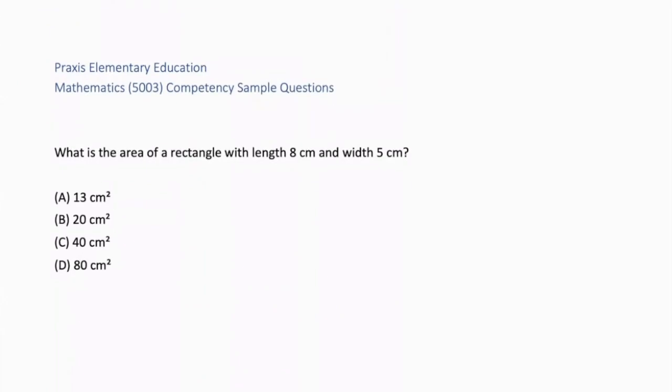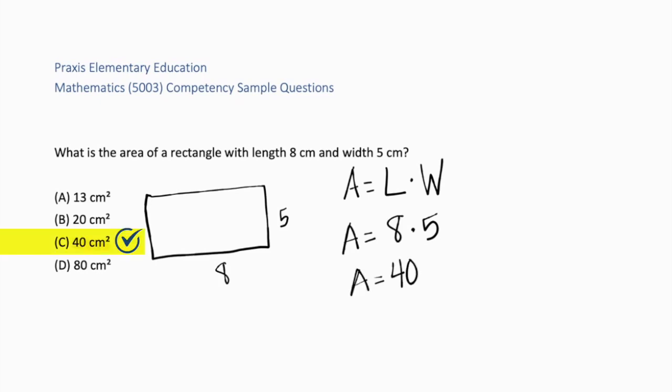What is the area of a rectangle with length 8 centimeters and width 5 centimeters? A, 13 centimeters squared. B, 20 centimeters squared. C, 40 centimeters squared. Or D, 80 centimeters squared. The best way to solve this problem is to create a visual. Area is length times width. We plug in 8 for length and 5 for width. 8 times 5 is 40. The correct answer is C, 40 centimeters squared. A is just adding the sides. B is multiplying the wrong numbers. And D was confusing it with perimeter, the sum of the sides.